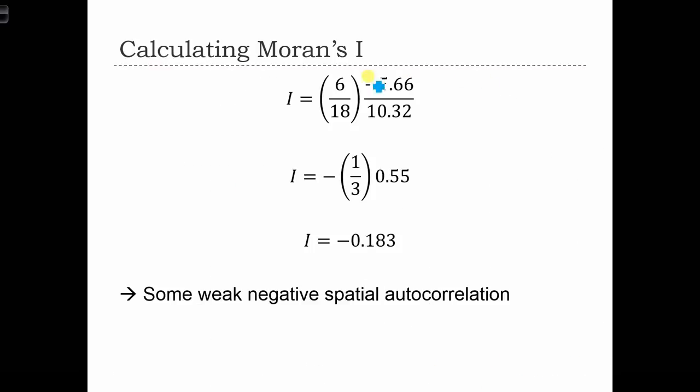So we had n, which was 6. We had n over the sum of sum of w, which was 18, 6 over 18. And we had the sum of the cross product terms, minus 5.66, and the sum of square deviances, which is 10.32. And that ends up with a Moran's i of minus 0.183, just some weak negative spatial autocorrelation.